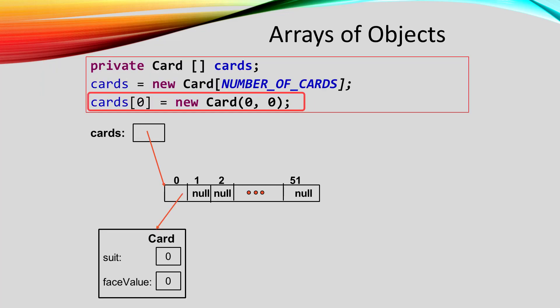In order to fill that array, our constructor used the new statement to create our 52 cards. Here's how the first one worked. We created a card that was the ace of spades. We gave it a suit of 0 and a face value of 0, and then we stored it in the 0th position of the cards array.